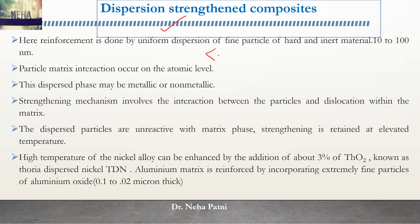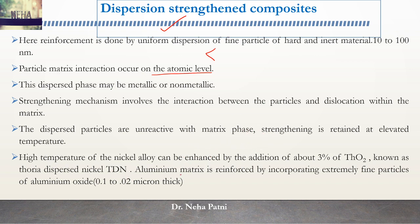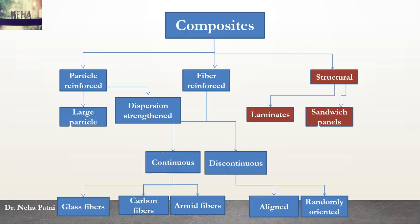The second type is dispersion strengthened. When the dispersed particle has a size lesser than the matrix, the interaction will occur at the atomic level. Examples include alloys. One alloy is TDN - Thoria Dispersed Nickel. When nickel is used at high temperature it has problems, so Thoria is mixed with nickel so that the TDN formed has high temperature stability. Another example is an aluminum matrix wherein fine particles of aluminum oxide are reinforced. So particle reinforced composite: if the particle is larger there is no atomic level interaction - large particle reinforced; if the reinforcing is done by a smaller particle - dispersion strengthened.